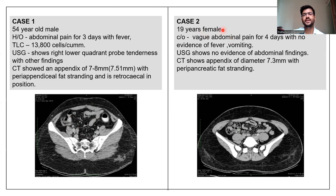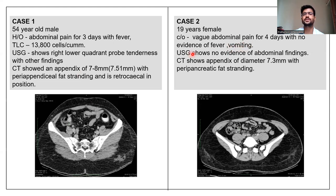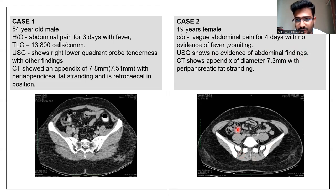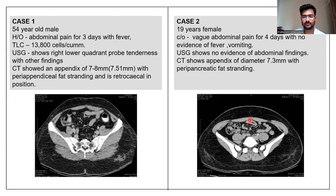Case 2 was an anterior female with vague abdominal pain for 4 days with no evidence of fever or vomiting. USG showed no evidence of abdominal findings. However, CT showed a diameter of appendix of 7.3 mm with peri-appendiceal fat stranding, as seen in the image.